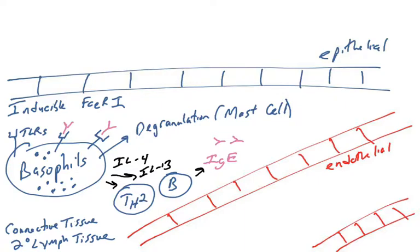And again, you can see they're similar to mast cells in that they have granules, and they will degranulate after recognizing a pathogen using their FC-epsilon receptors.